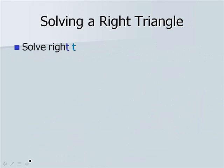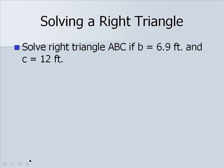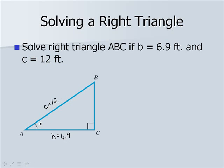Now, let's solve another triangle. This time, instead of being given an angle and a side, we're given two sides. We have side c is 12 and side b is 6.9. We need to find angle A, angle B, and side a.